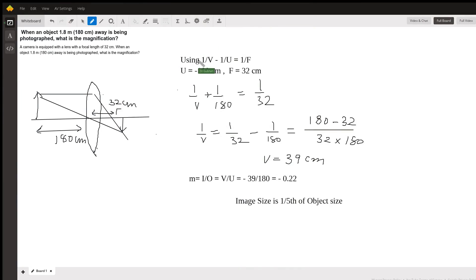This question is on image formation by a convex lens. A camera has a lens with focal length 32 centimeters. When an object at a distance of 180 centimeters away is being photographed, what is the magnification?